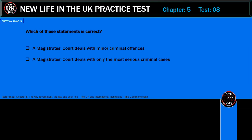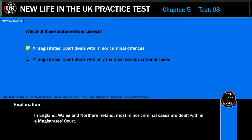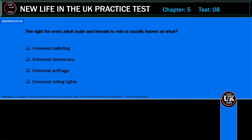Which of these statements is correct? A magistrates court deals with minor criminal offences; or a magistrates court deals with only the most serious criminal cases? Correct answer: a magistrates court deals with minor criminal offences. Explanation: In England, Wales, and Northern Ireland, most minor criminal cases are dealt with in a magistrates court.